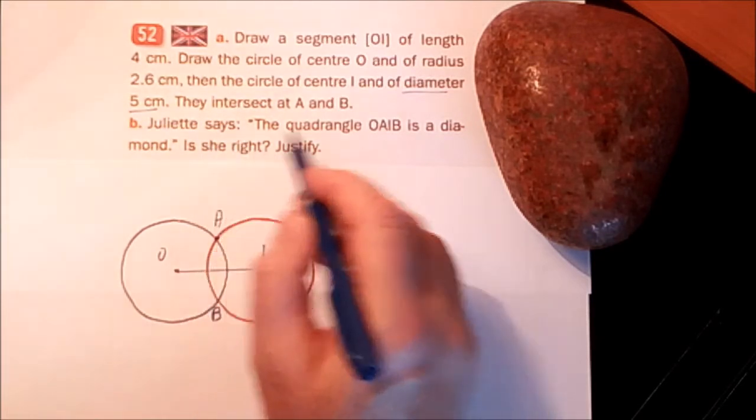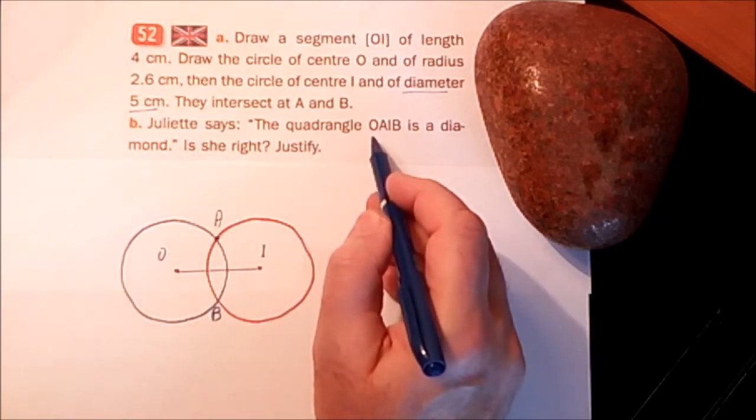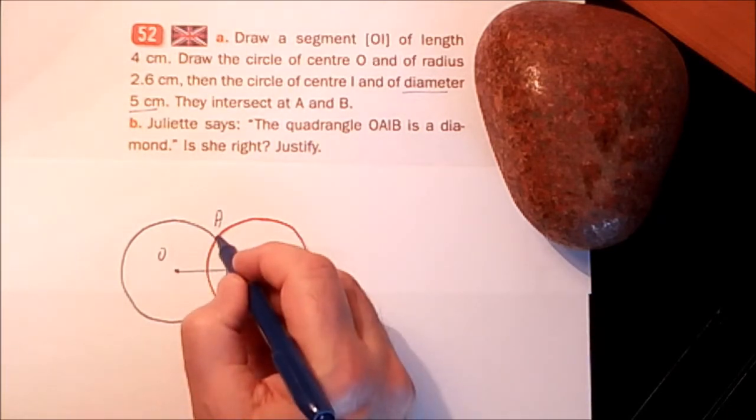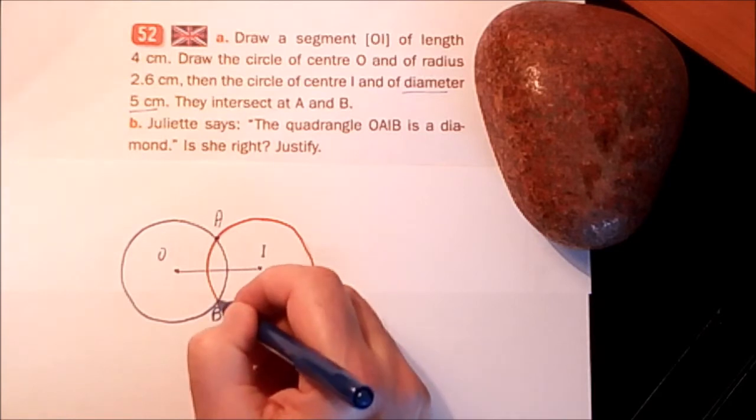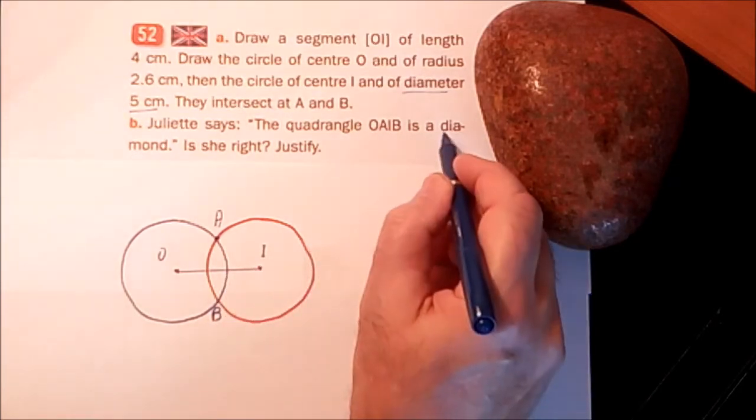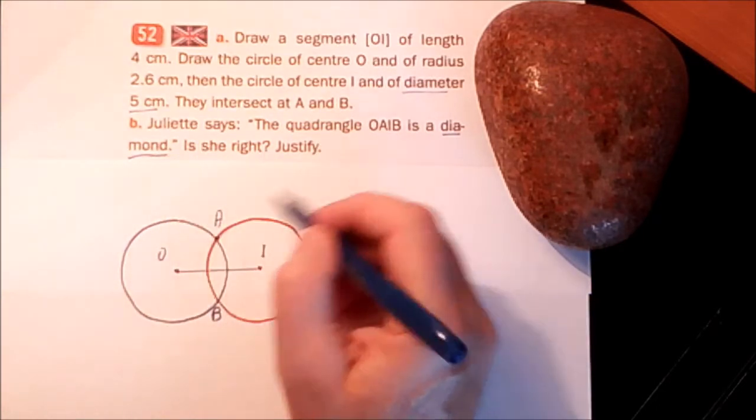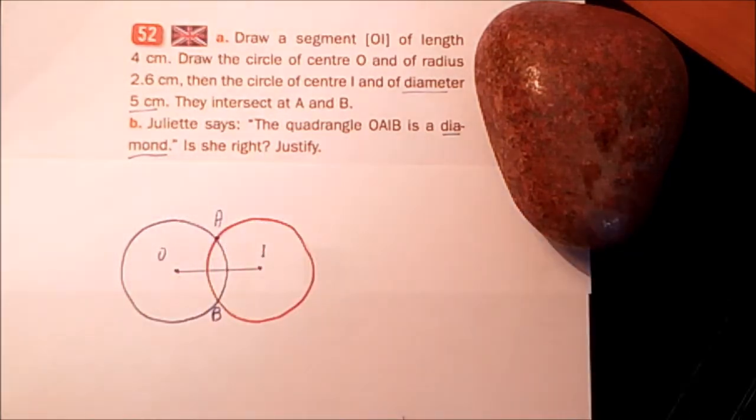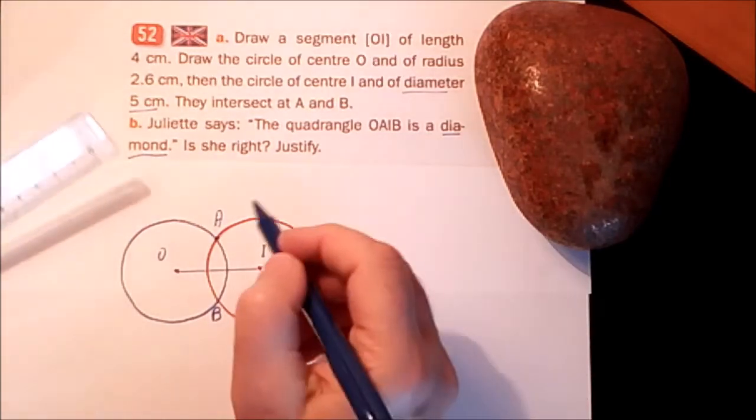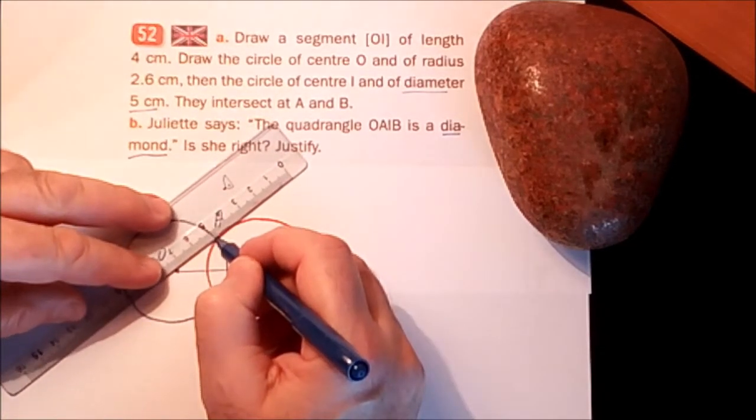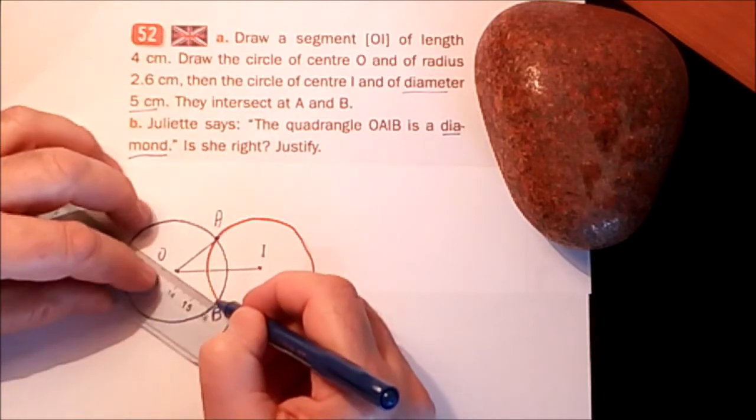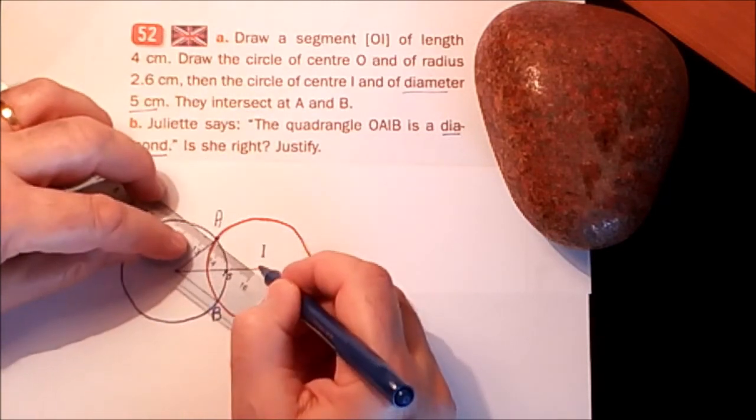Juliette says: The quadrangle OAIB is a diamond. Ça veut dire en français que le quadrilatère OAIB c'est un losange. Is she right? Justify. Est-ce qu'elle a raison? Justifiez.